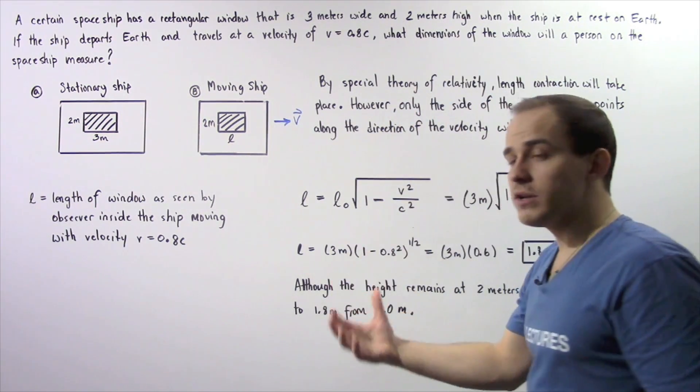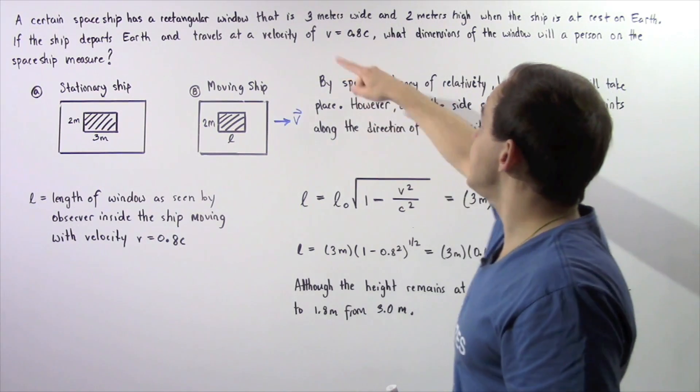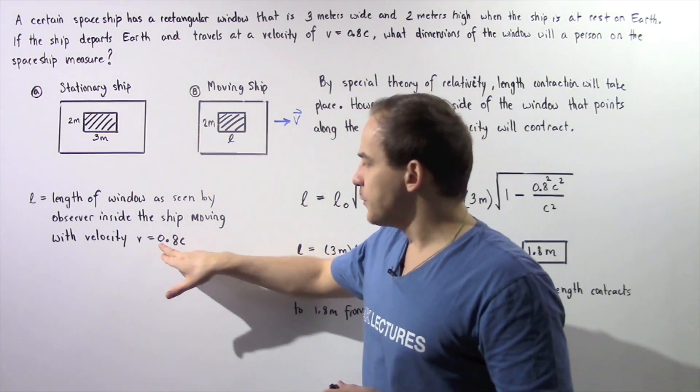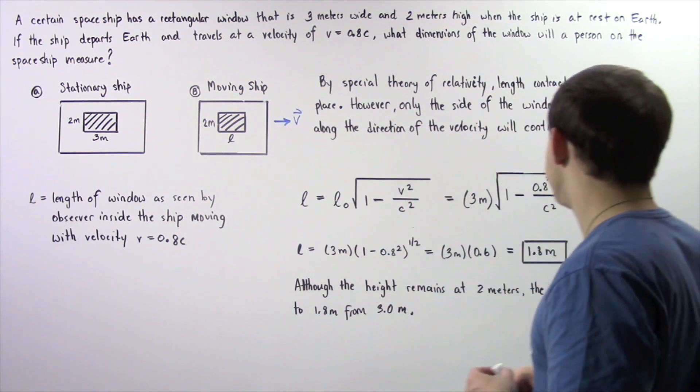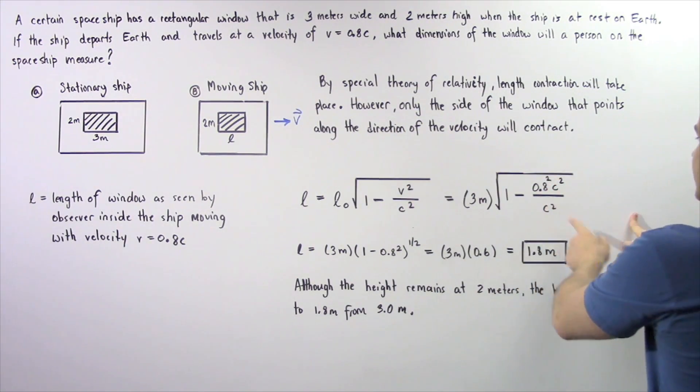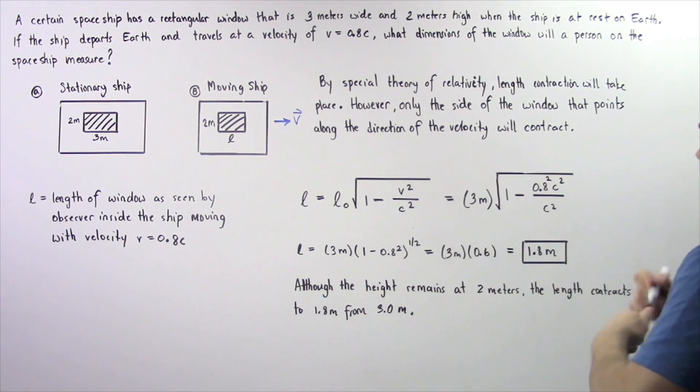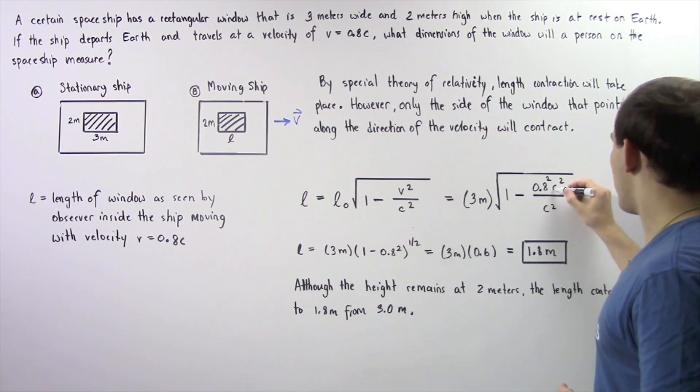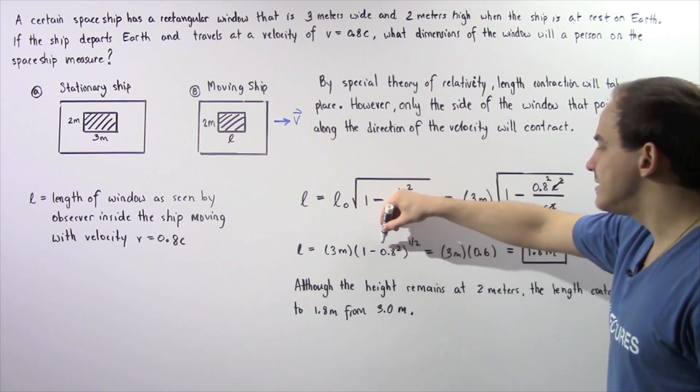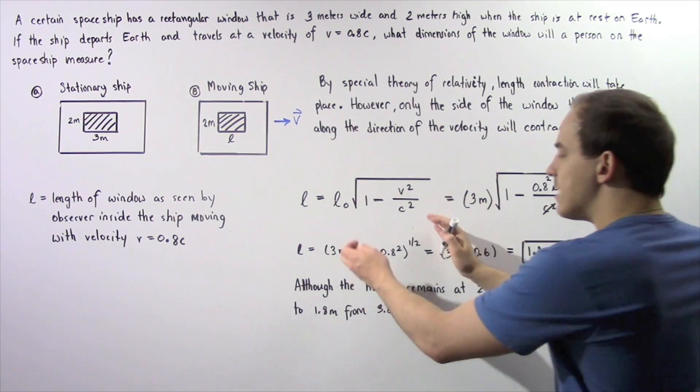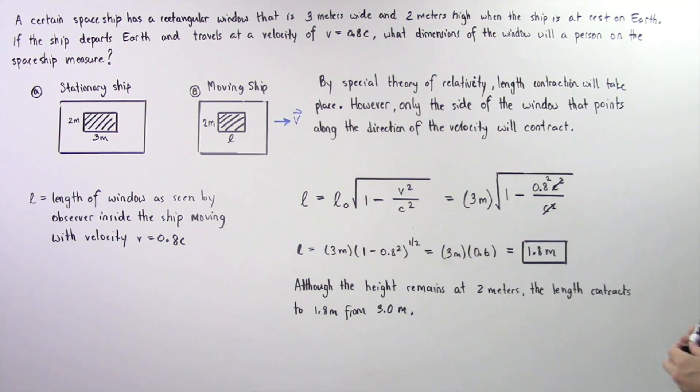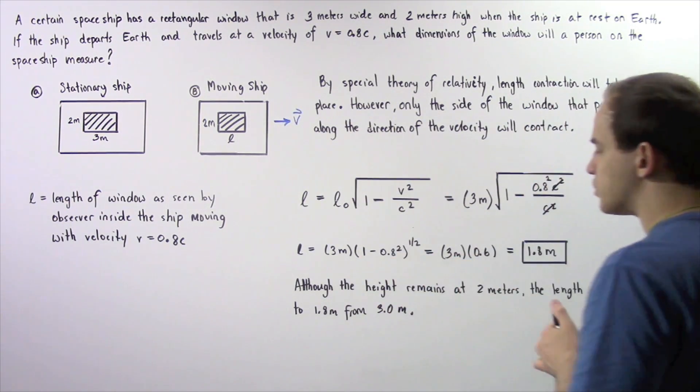Now L0, which is known as the proper length, is equal to 3 meters and V is equal to 0.8 multiplied by C. So 0.8 squared multiplied by C squared divided by C squared. Notice that the C squared will cancel and we're left with 1 minus 0.8 squared, and this entire thing is raised to the power of 1 divided by 2. So we're taking the square root.